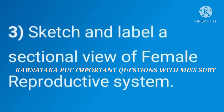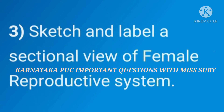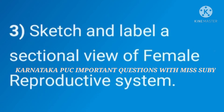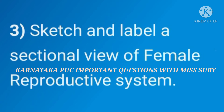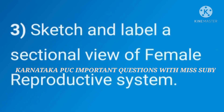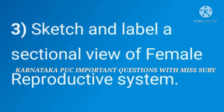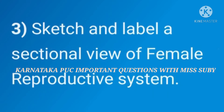Coming to the third important question: sketch and label a sectional view of the female reproductive system. This is almost the most repeated question, so practice well and draw it perfectly. Here also you have to label at least six to eight parts with a neat diagram.